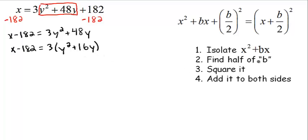We need to find half of b. So b is 16. b divided by 2 is 16 divided by 2, which is 8. Then our third step is to square it. So we take 8 and square it, which gives us 64.